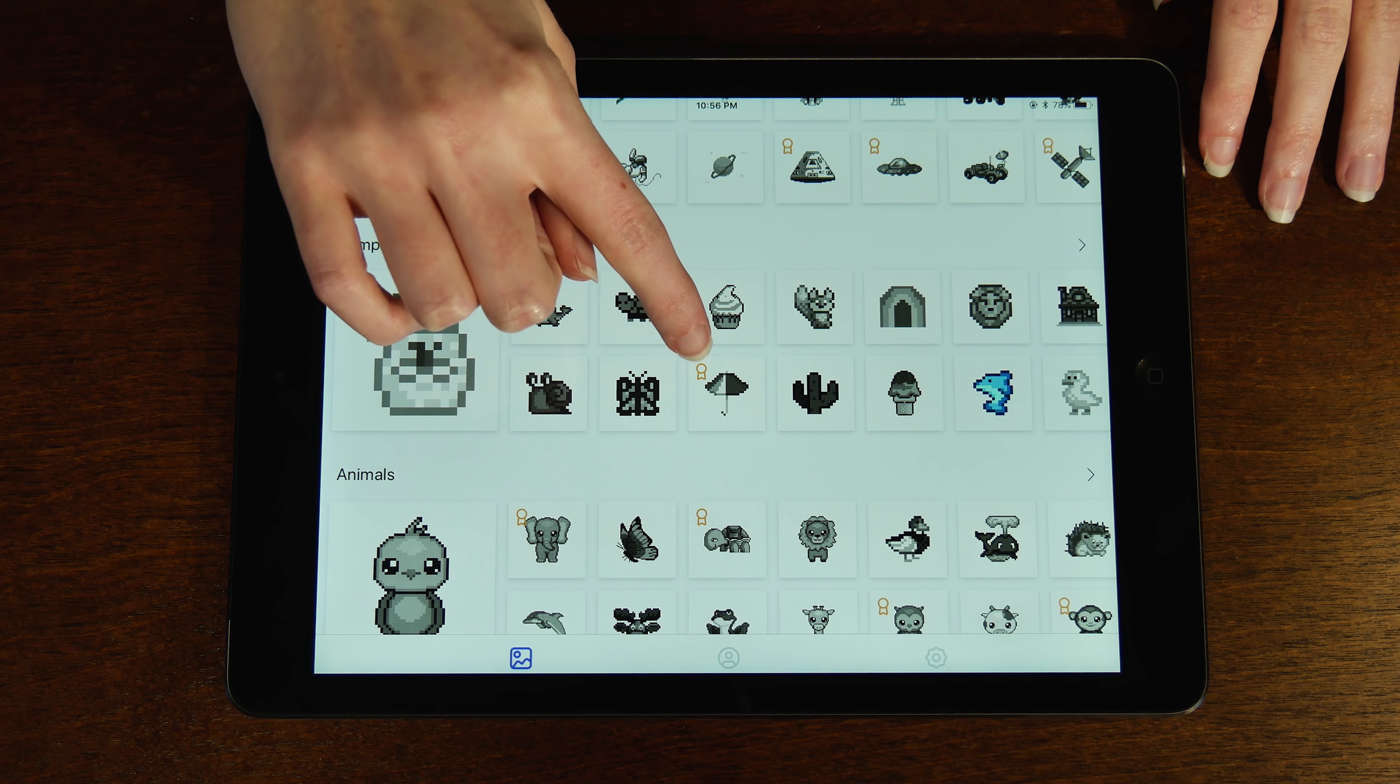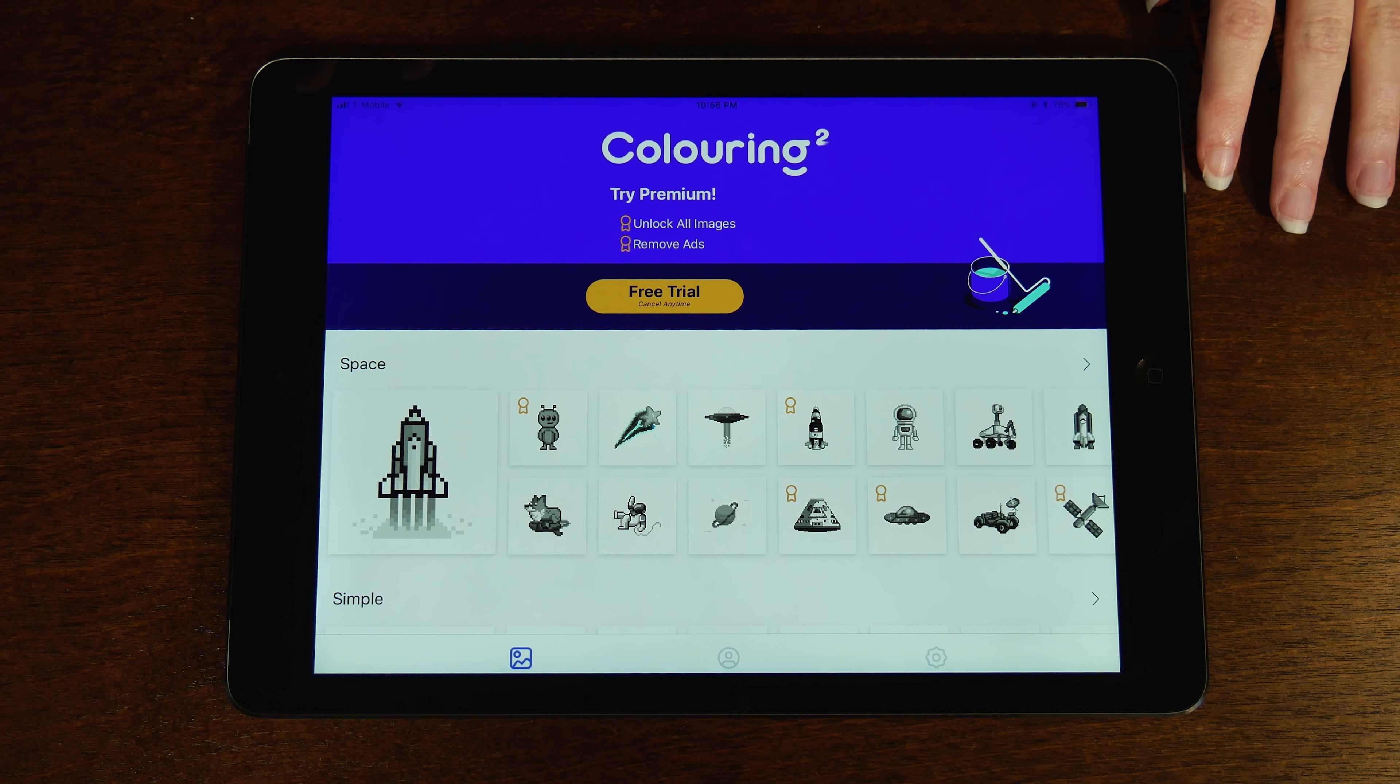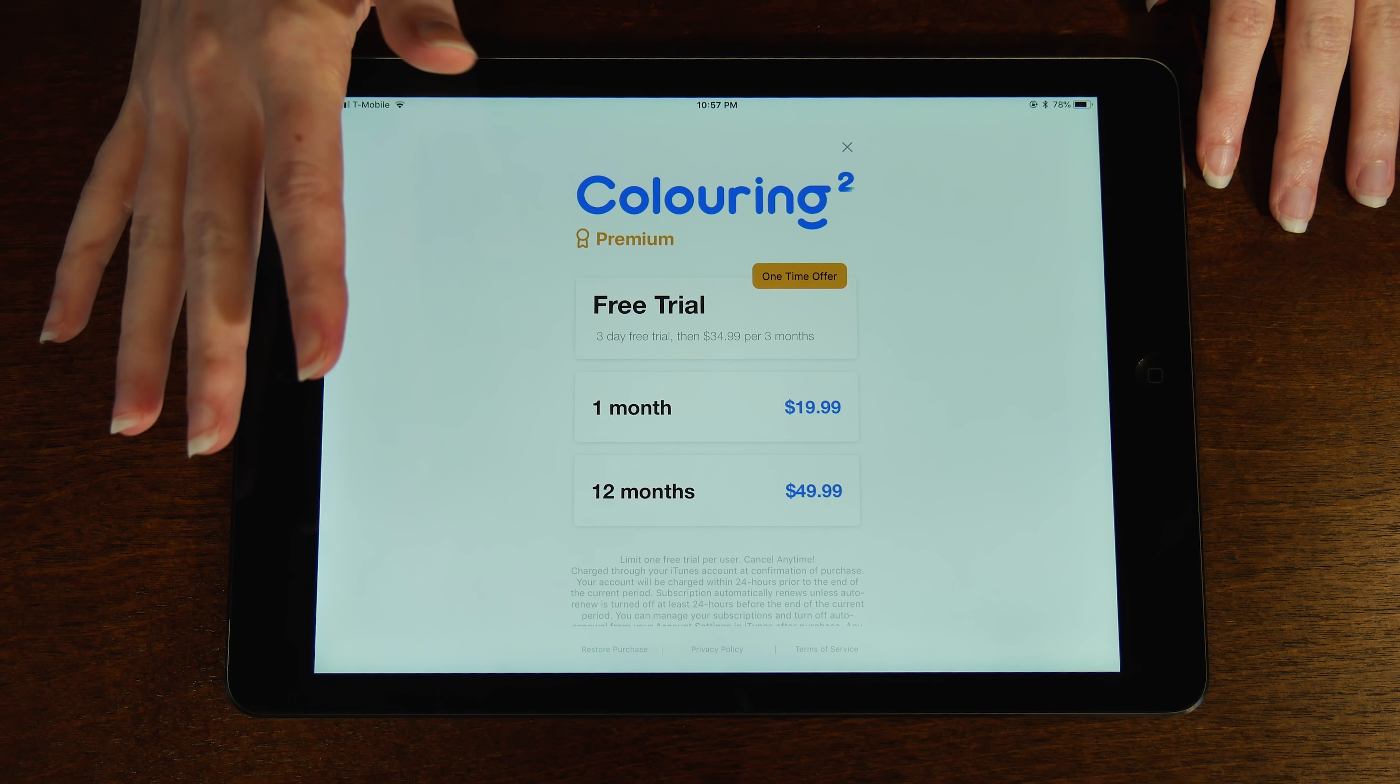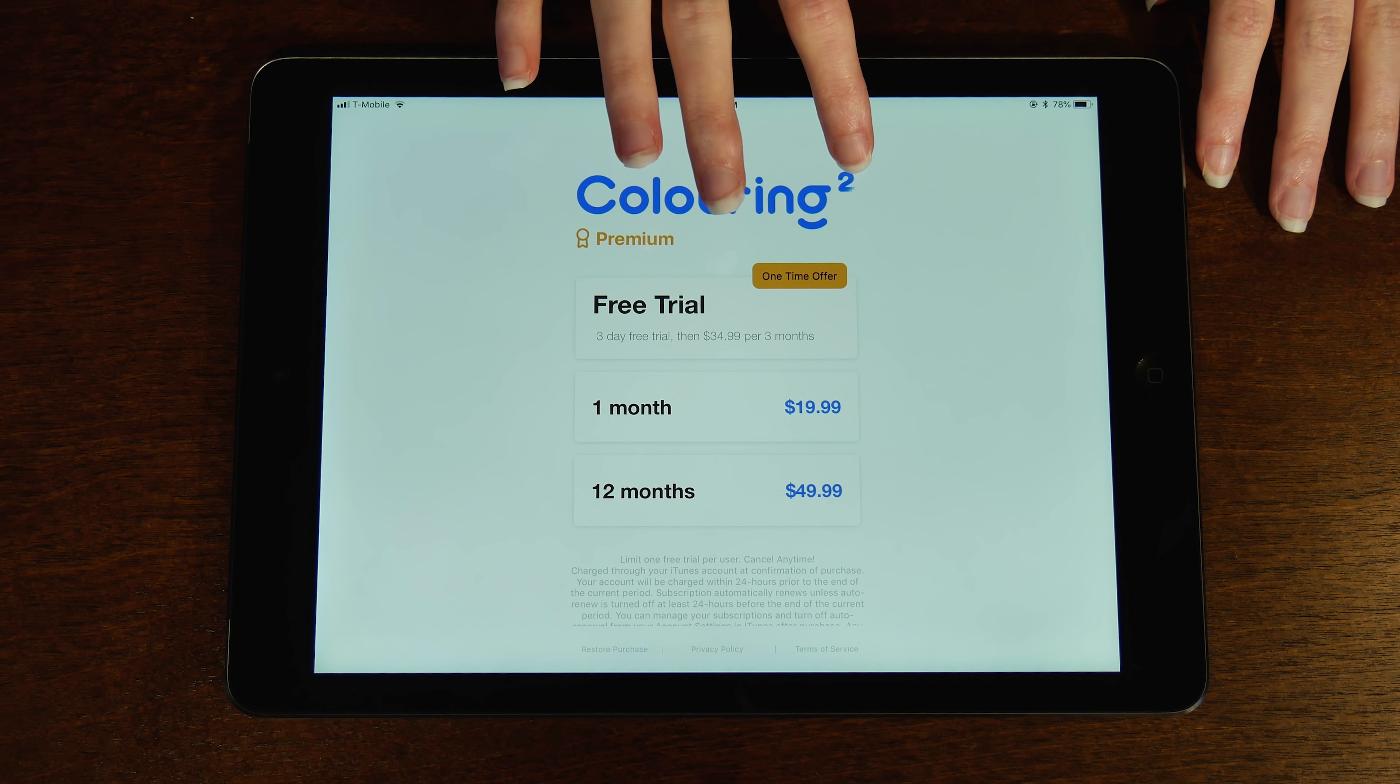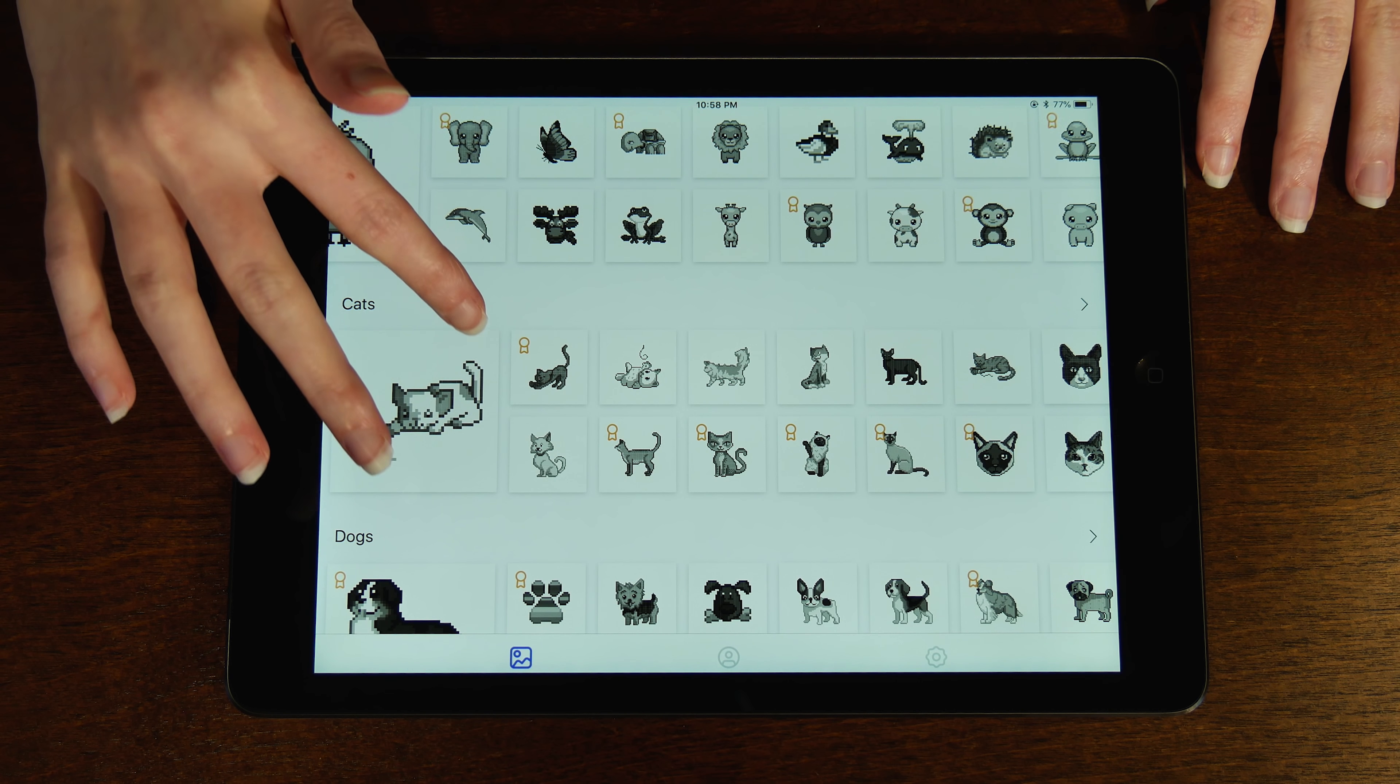If you see any little ribbons or medals next to it, it is because they are locked for premium members. This app is completely free, but it does include premium additional content, which you can see here. You can have access to a free trial for three days of all of the premium content and pictures on this app.